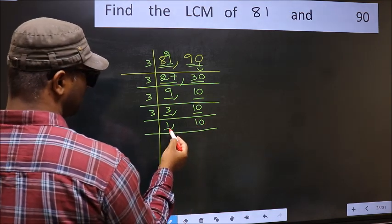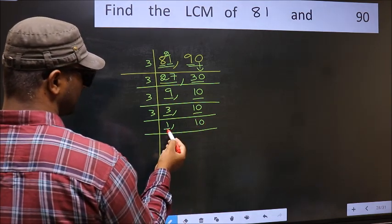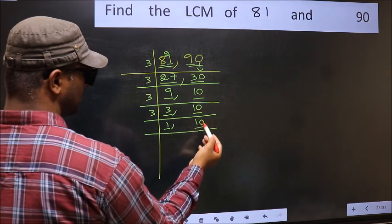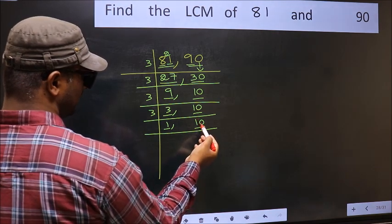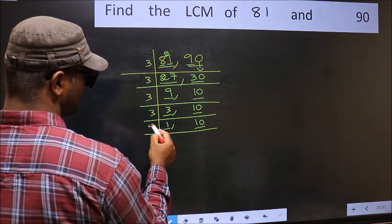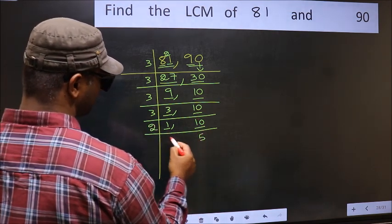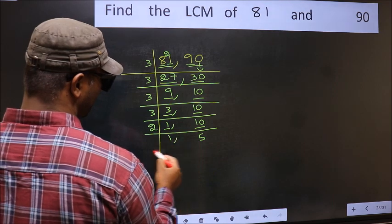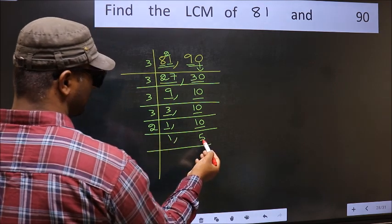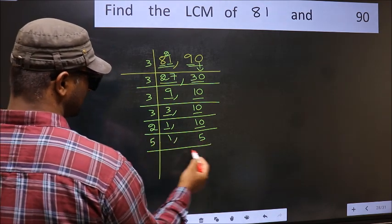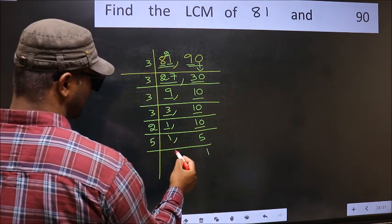Now we get 1 on the left side, so focus on the next number, 10. For 10: 2 times 5 is 10, so 10 divided by 2 is 5. Now we have 5, which is a prime number, so 5 times 1 is 5.